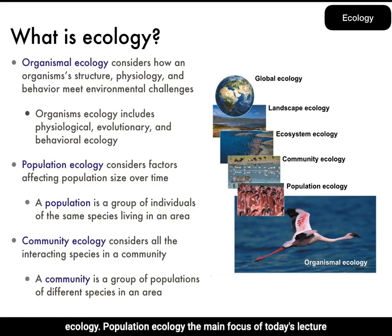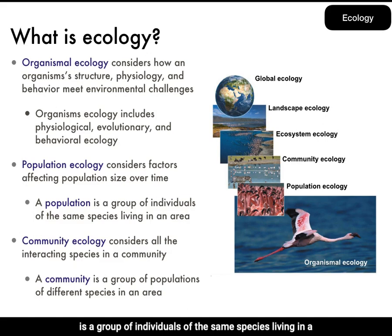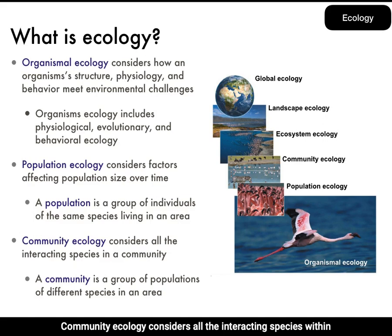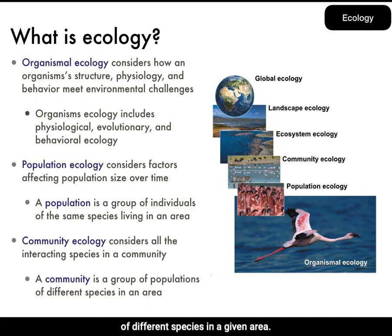Population ecology — the main focus of today's lecture — considers factors affecting population size over time. A population is a group of individuals of the same species living in a defined area. Community ecology considers all the interacting species within a community, which is defined as a group of populations of different species in a given area.